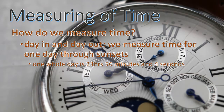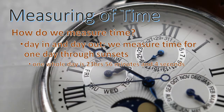One whole day takes 23 hours, 56 minutes, and 4 seconds. This is the exact time for the Earth to rotate, and this is the reason why we have one whole day added in the fourth year on our calendar.